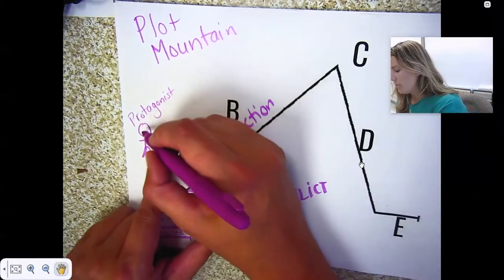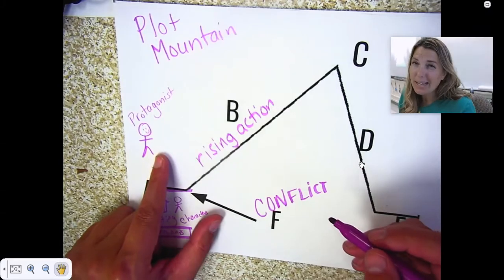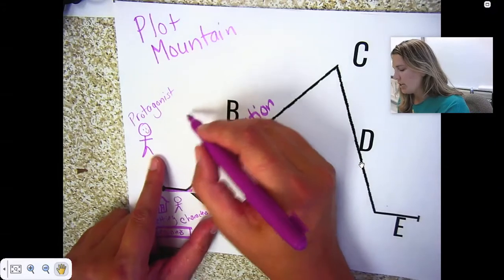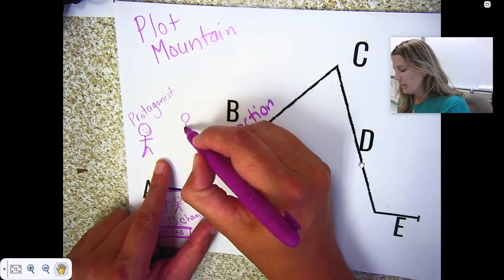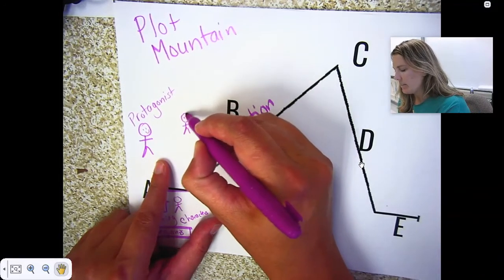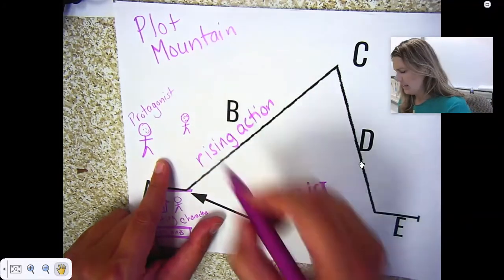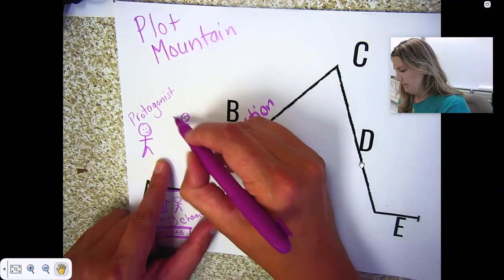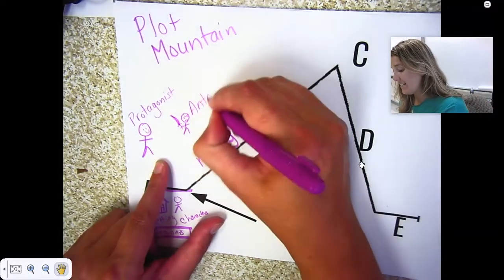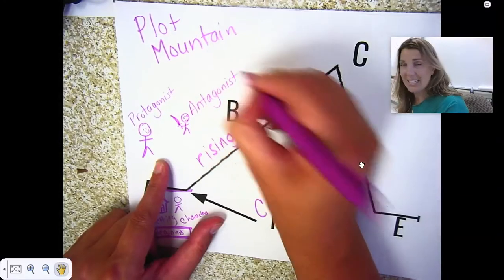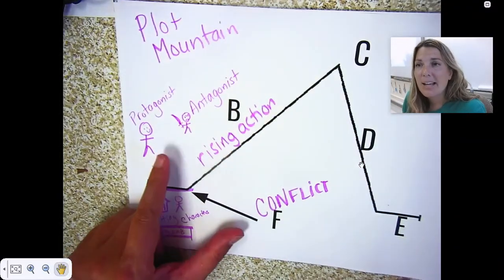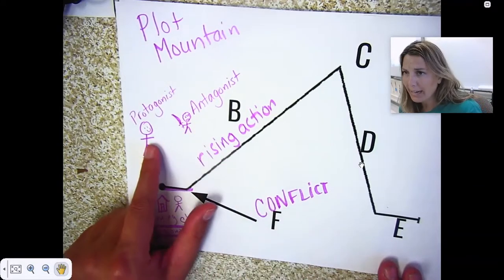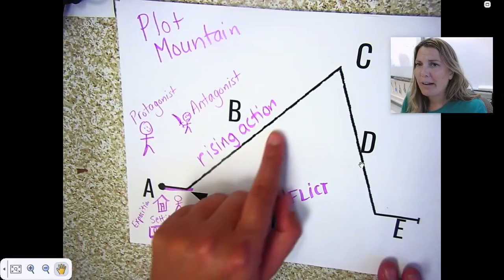The protagonist is usually the main character — the good guy, the hero of the story. Then you have the antagonist. Let me give him some mean eyebrows — he's the mean guy. Let's give him a sword. The antagonist is the villain, the bad guy, and usually the antagonist is causing the conflict for the protagonist all through the rising action.